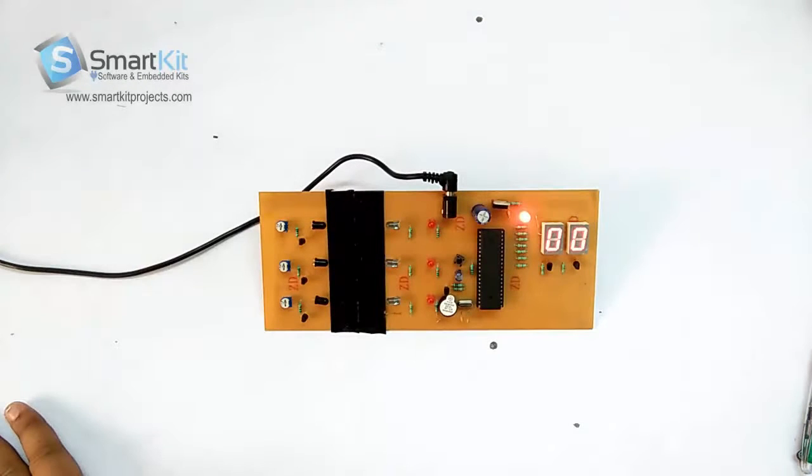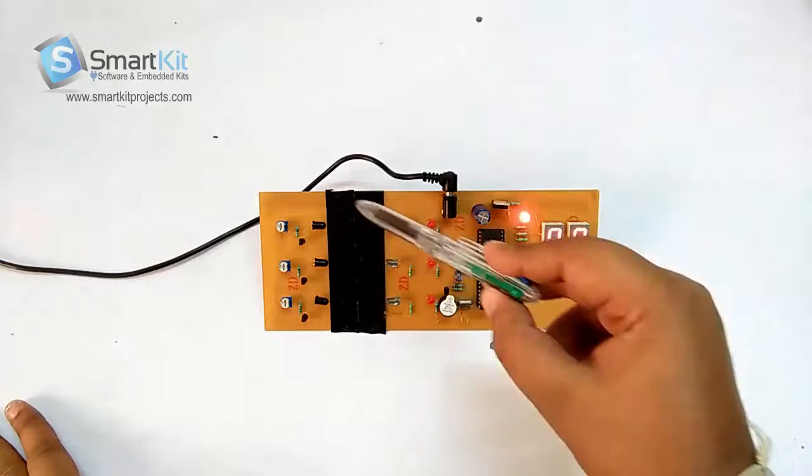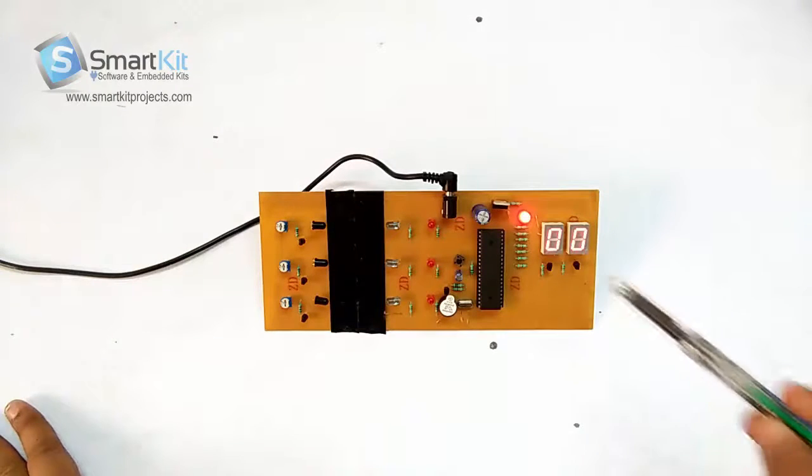Hi friends, welcome to www.smartkitproject.com. The name of this project is conveyor belt object counter. Now as you can see, the objects which are sliding from here will be counted by this seven segment display and it will show you how many objects have passed from here.